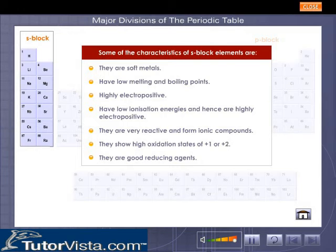Some of the characteristics of S-Block Elements are: They are soft metals, have low melting and boiling points, highly electropositive, have low ionization energies and hence are highly electropositive. They are very reactive and form ionic compounds. They show high oxidation states of plus 1 or plus 2. They are good reducing agents.